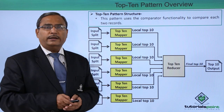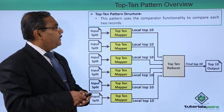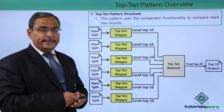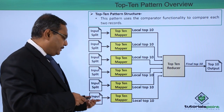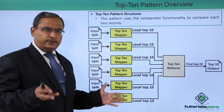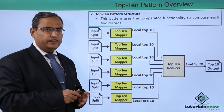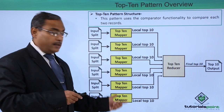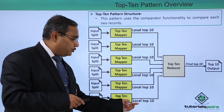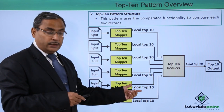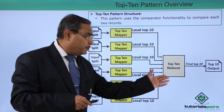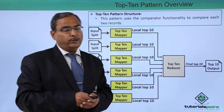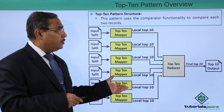Now let us look at a diagram for better understanding. The top 10 pattern structure uses comparator functionality to compare each two records. Here we are having the input splits — we are dealing with huge data sets, so that will be divided into multiple splits. They will be assigned to the top 10 mapper, with multiple mappers working. Depending upon the input split, they produce their local top 10 records. This output from the mapper is made available to the top 10 reducer, and the reducer makes the final top 10, which is the final output of this design pattern.